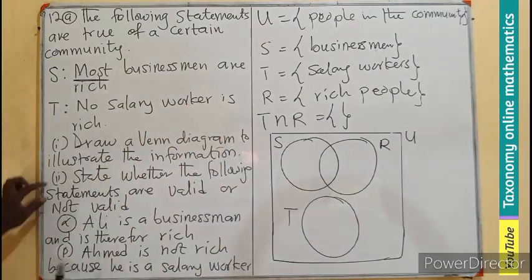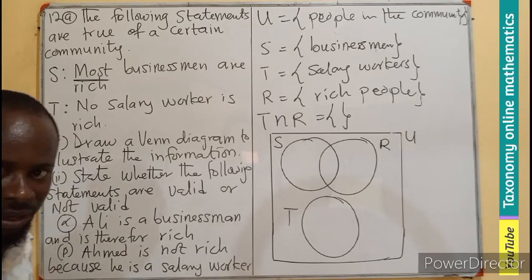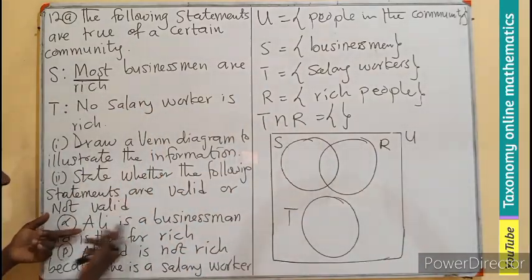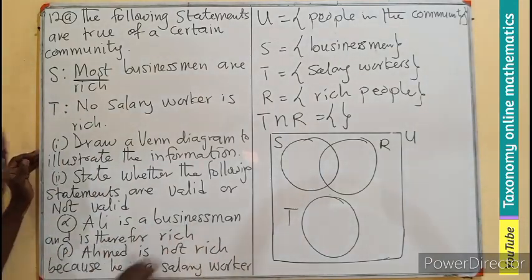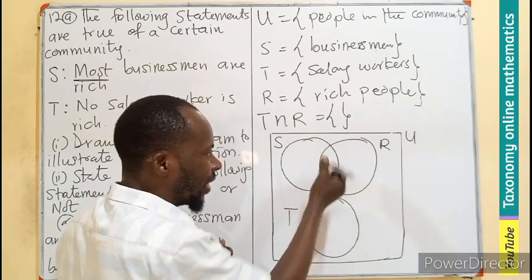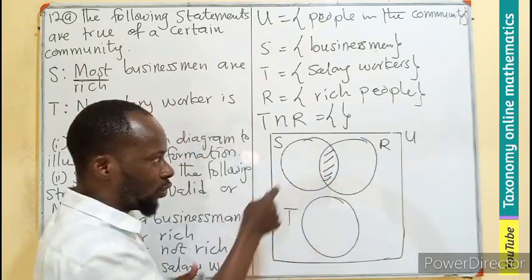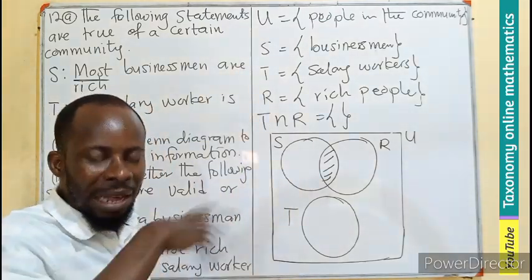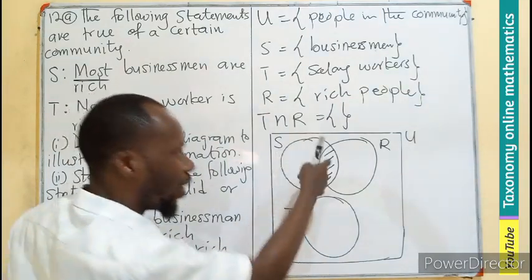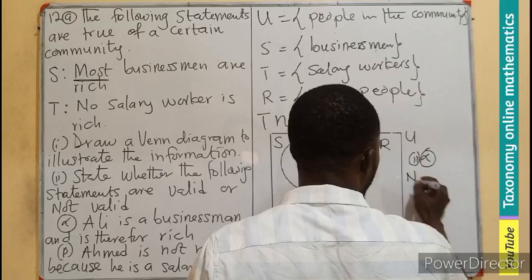Looking at this to find the statement validity. Ali is a businessman and therefore is rich. Is that statement valid? We have a preceding statement and a concluding statement. Ali is a businessman, so we are concluding that he is rich. Could that be true from the community? All those who are businessmen are here. Are they all rich? No. Only some of them are rich. Ali could be rich, founding himself here, but it could also be true that Ali is in this part, the subset. So this statement is going to be not valid.